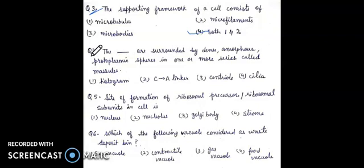Question 4: the dashes are surrounded by dense amorphous protoplasmic spheres in one or more series. Options include histogram, C.A. linker, centriole, and cilia. The answer is centriole.